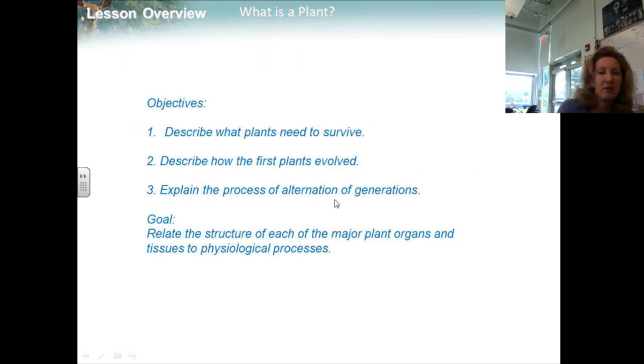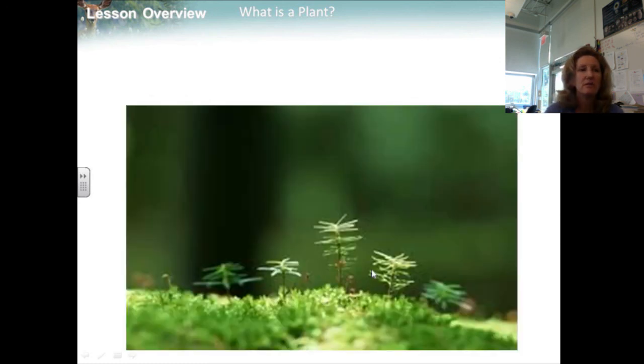So our objectives for this lesson is to describe what plants need to survive, describe how the first plants evolved, and also explain the process of alternations of generations. And yes, they all relate to the goal of each of the major plant organisms and tissues to the physiological processes. Thank you, ladies and gentlemen, for listening to 22.1.